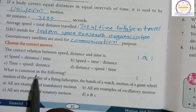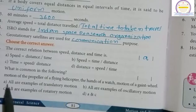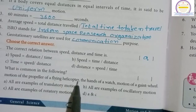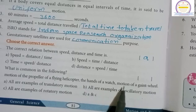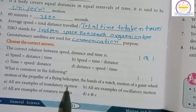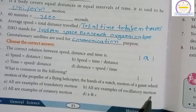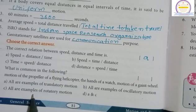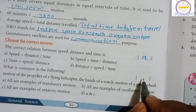What is common in the following: motion of the propeller of a flying helicopter, the hands of a watch, motion of a giant wheel? a) All are examples of translatory motion, b) all are examples of oscillatory motion, c) all are examples of rotatory motion, d) A and C. The answer is C: all are examples of rotatory motion.